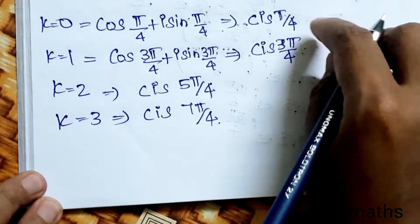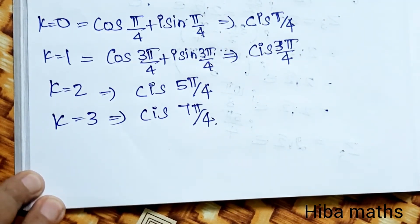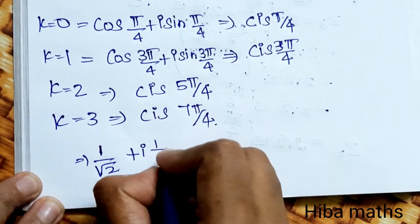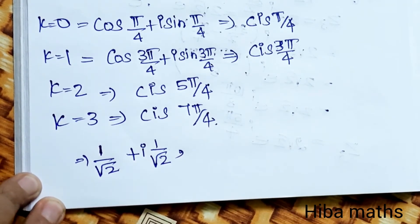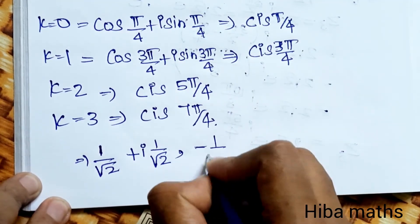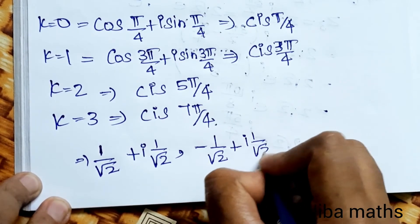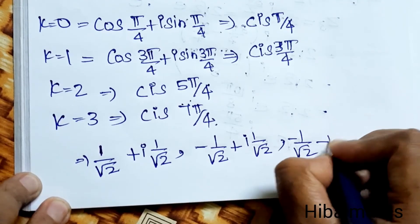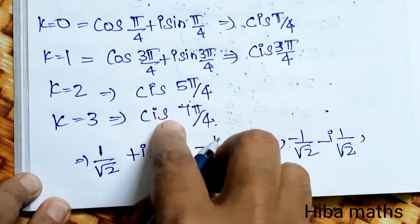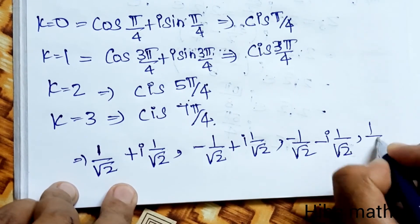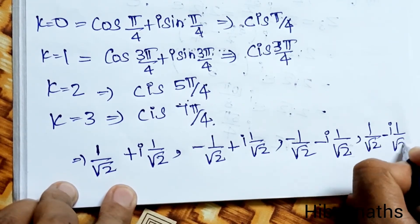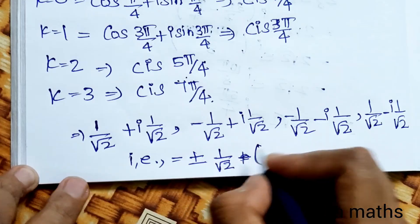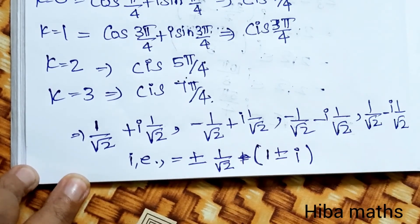Now converting: π/4 = 45°, so cos 45° + i sin 45° = 1/√2 + i(1/√2). For 3π/4: cos(3π/4) + i sin(3π/4) = -1/√2 + i(1/√2). For 5π/4: cos(5π/4) + i sin(5π/4) = -1/√2 - i(1/√2). For 7π/4: 1/√2 - i(1/√2). All four values combine as ±(1/√2)(1 ± i), which is proven.